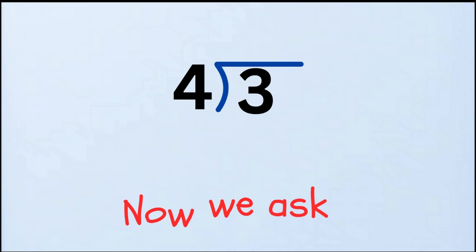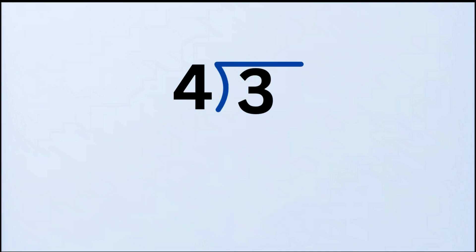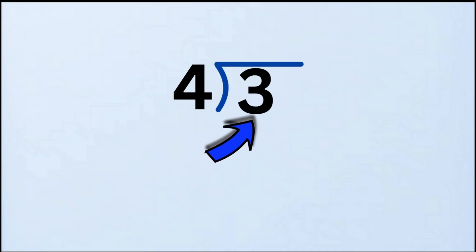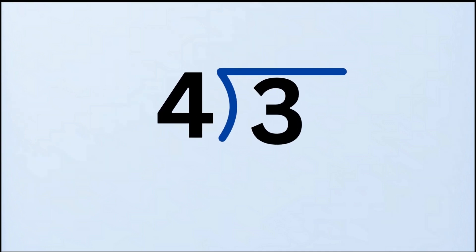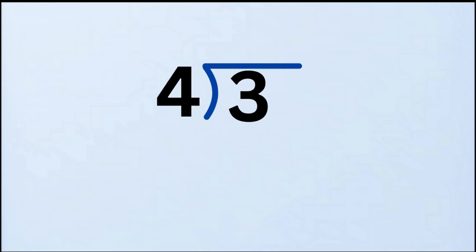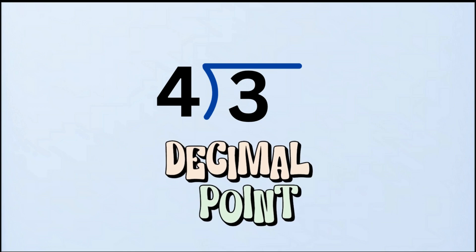Now we ask: how many times does four go into three? Well, four doesn't go into three, because four is bigger than three. So what do we do now? Looks like we need a little extra help. That's why the decimal point comes in.